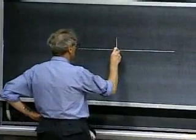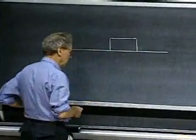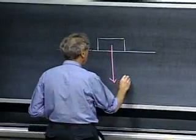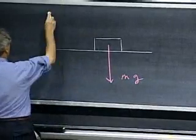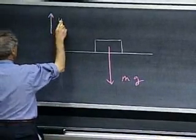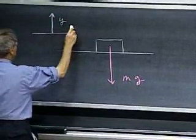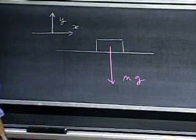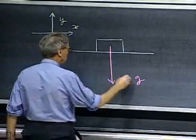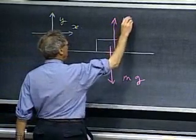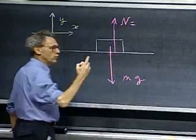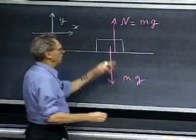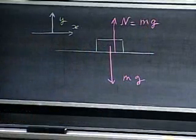I have an object on a horizontal surface. The object has a mass m, gravitational force mg. This is the y-direction. This could be the x-direction. There must be a force pushing upwards from the surface to cancel out mg because there's no acceleration in the y-direction. We normally call that the normal force because it's normal to this surface and it must be the same as mg, otherwise there would be an acceleration in the y-direction.